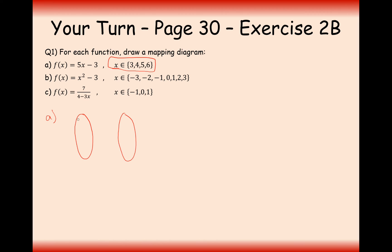Alright then, for the first question A, our inputs are going to be 4, 5, 6, and 7. The output for 3 is going to be 15 minus 3, which is 12. 20 minus 3 is 17, 25 minus 3 is 22, and 30 minus 3 is 27. This is the input set of numbers, and this is the output set of numbers.